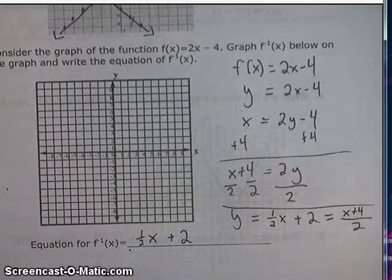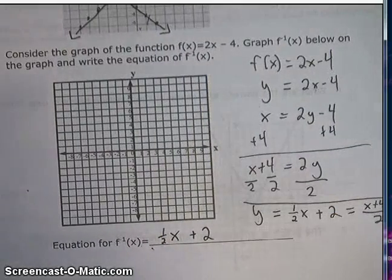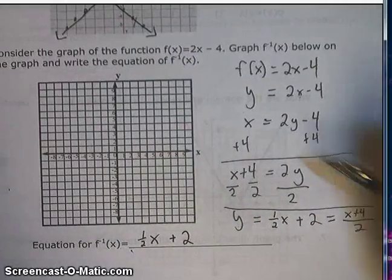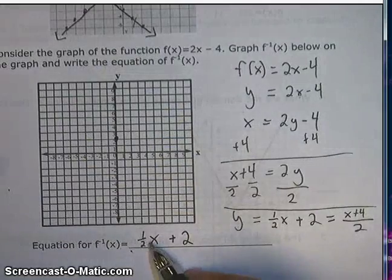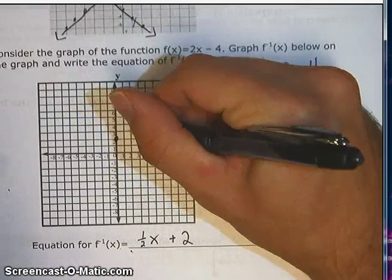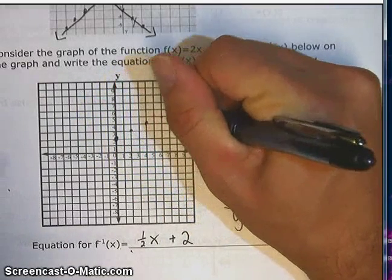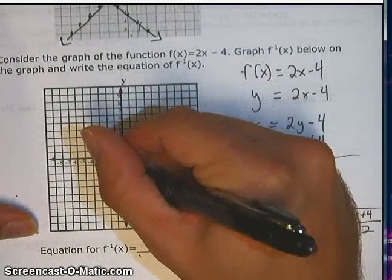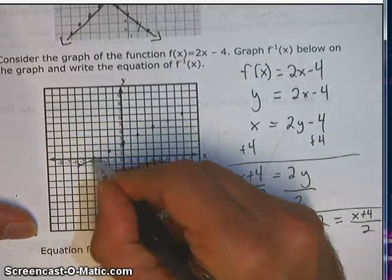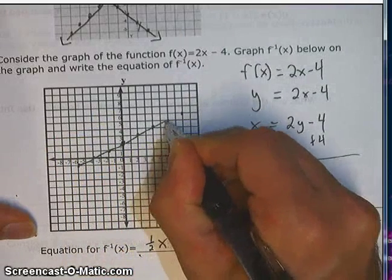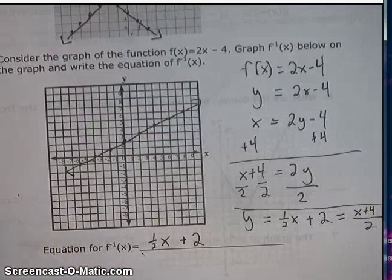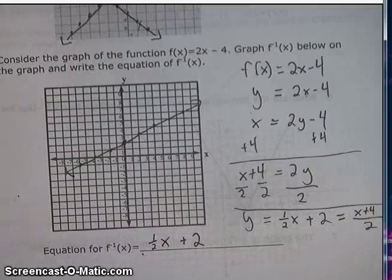From here, I'm simply going to graph it. It doesn't say to graph both equations, just to graph the inverse. So the y-intercept is plus 2, and the slope of one-half means up 1 over 2 repeatedly, and down 1 over 2 the other way. So I've got a line that looks like this. Graph below on the graph and write the equation — looks like we've done that.